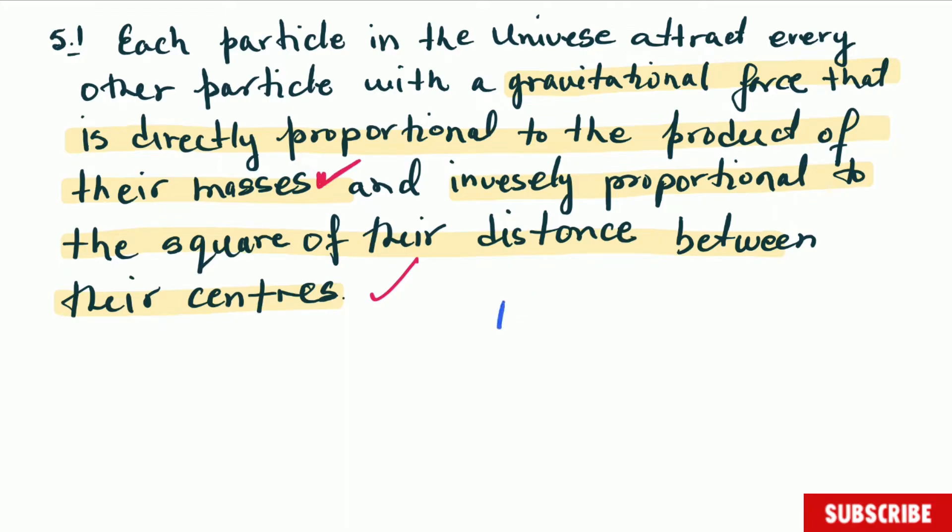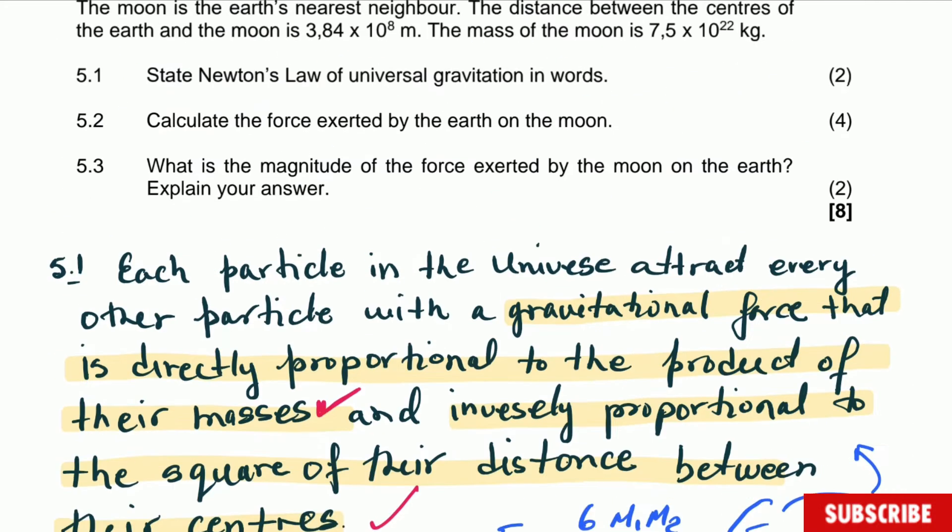This law, the formula, is saying that gravitational force is equal to G multiplied by the product of mass 1, mass 2, divided by distance squared. If you don't remember, you can use it to write the definition. Gravitational force is directly proportional to the product of M1, M2, divided by distance squared. So if you use the formula, you may remember and use it to state the law.